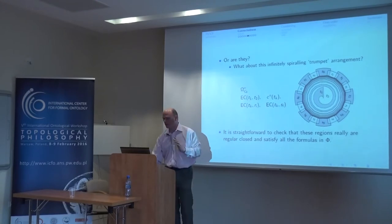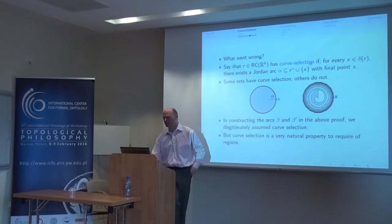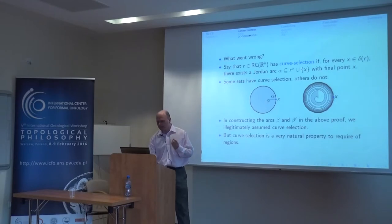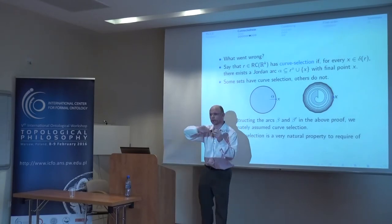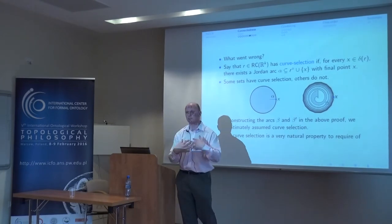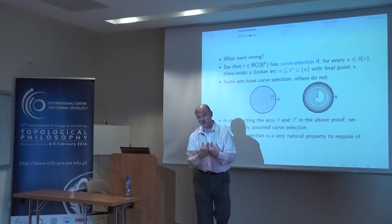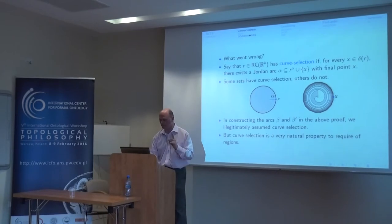More formally, we say that a region has curve selection if every boundary point on that region has a Jordan arc lying entirely in the interior of the region ending on that boundary point. In other words, every point on the boundary can be reached from some point in the interior by a Jordan arc lying entirely within the region. These pathological regions that I devised to satisfy the apparently impossible constraints do not have curve selection. They are pathological regions.